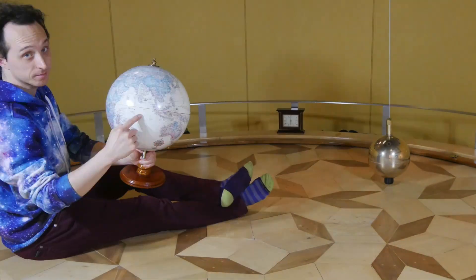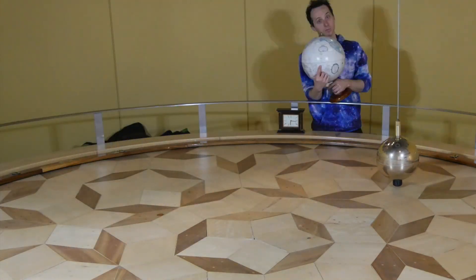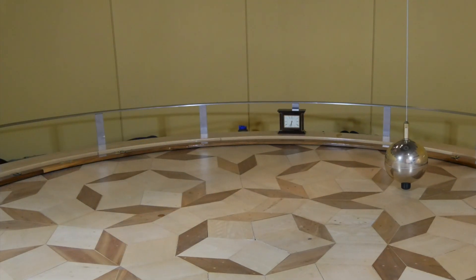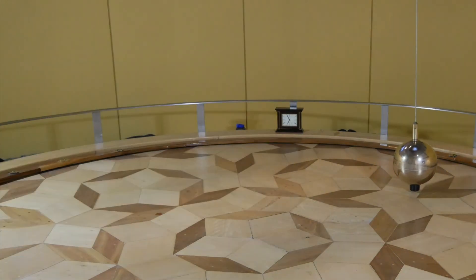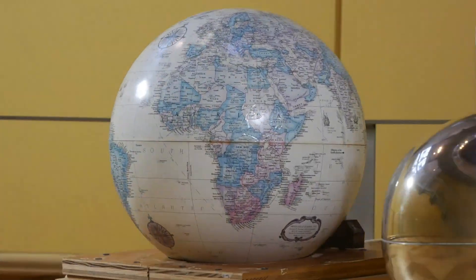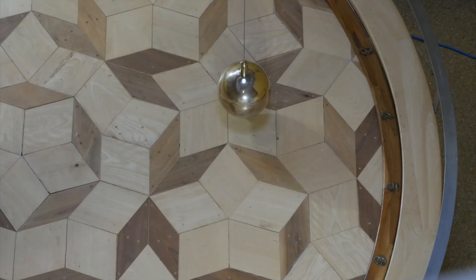At the equator, a pendulum day lasts forever, and that's because at that location, a pendulum is perpendicular to the axis of rotation. The planet and the pendulum's plane are not moving in relation to one another.